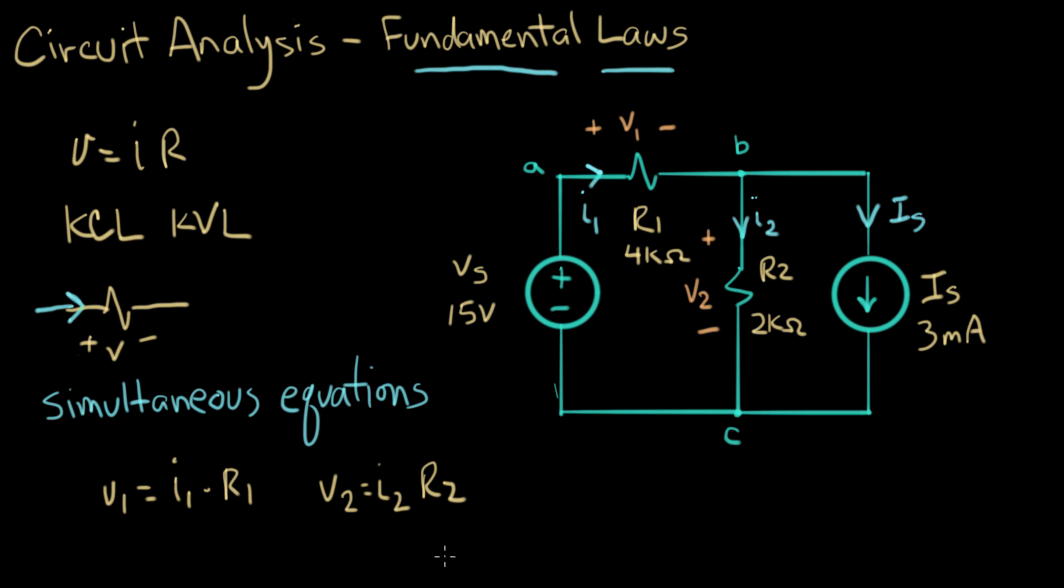All right, that's not a bad start. We have two equations. How many unknowns do we have? I2 and V2 are unknown. I1 and V1 are unknown. So we have four unknowns and we have two equations. So we're halfway there. And now we need to come up with some more equations.